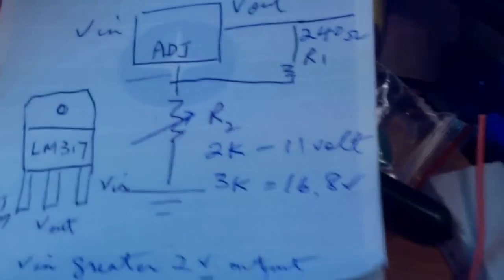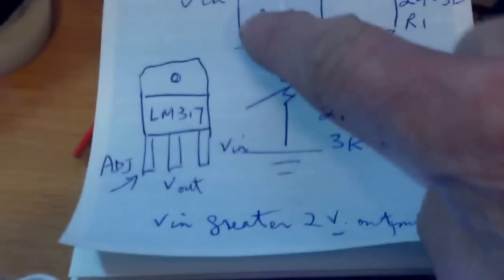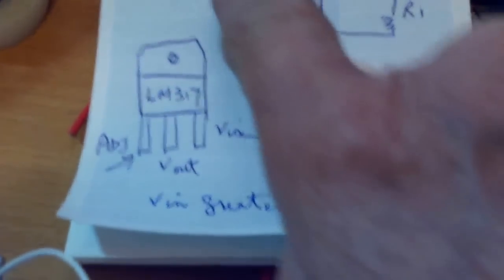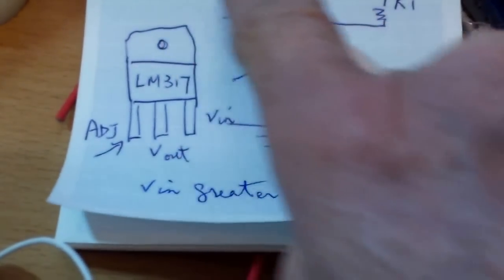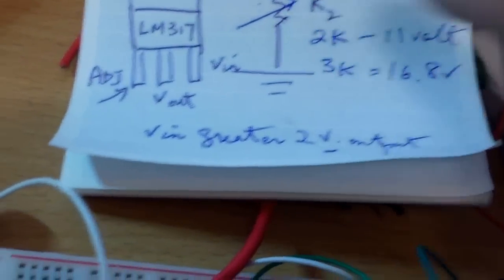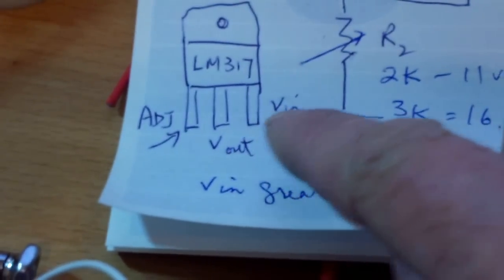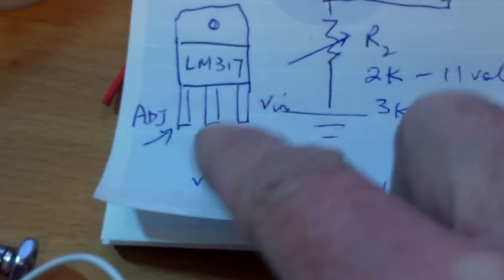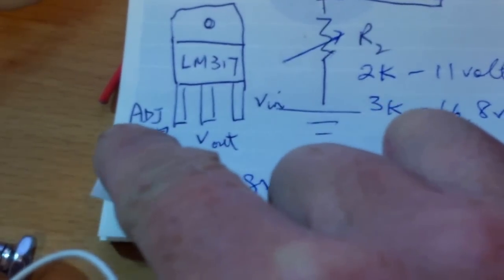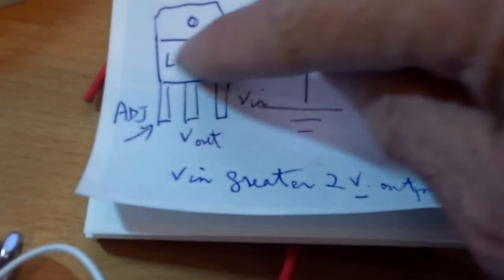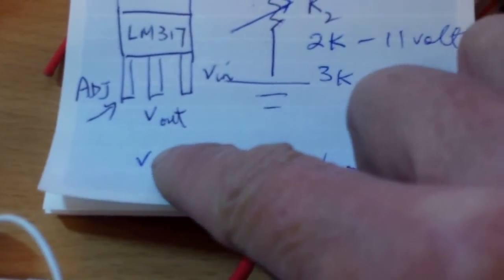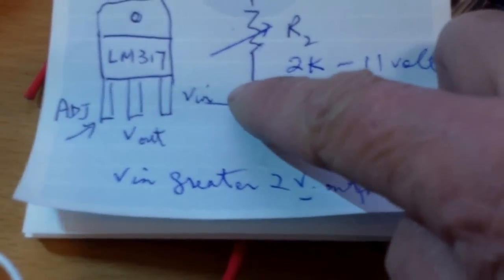The schematics, the way they have the pins laid out in the schematic—voltage in, voltage out, and the adjust in the middle—is different from the pin-out on the LM317. On the actual LM317, with the chip facing you, adjust is on the left, voltage out is in the middle, and voltage in is on the right hand side, which is different from what the schematic shows.